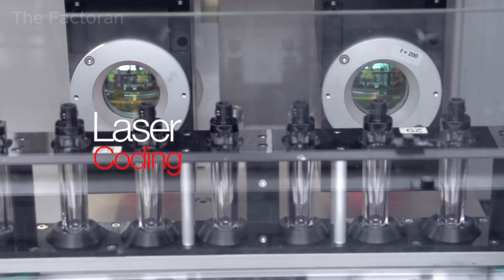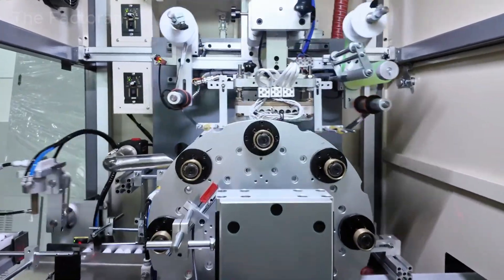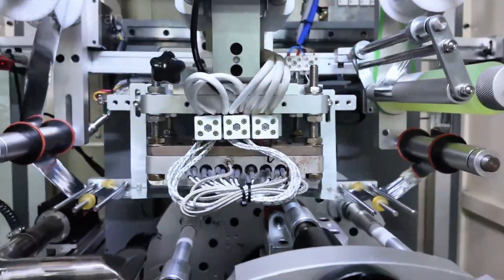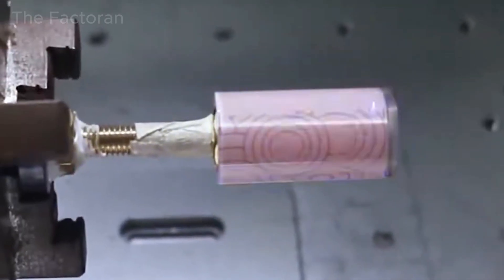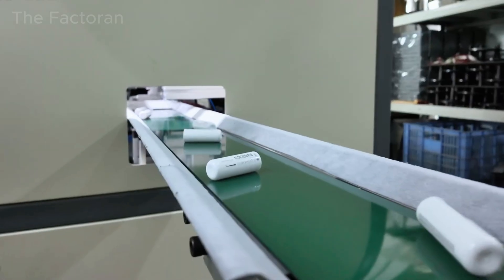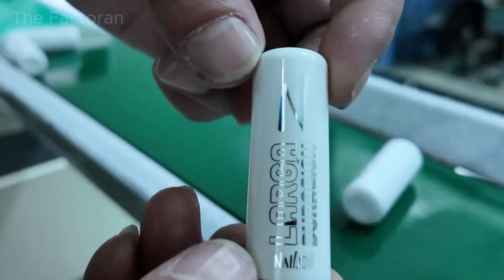A laser coating system engraves batch numbers, production shift codes or traceability markings directly onto the body or base of each case. Laser technology enables non-contact marking without ink, ensuring that neither the appearance nor the material durability of the case is compromised.